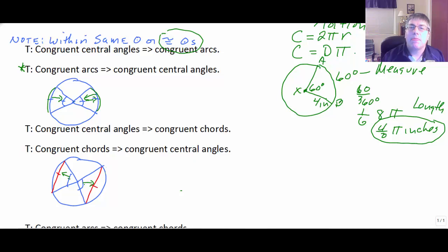Well, again, the converse of that is true. If my chords are congruent, that means my central angles have to be equal width or equal opening. So then my central angles are going to be congruent.